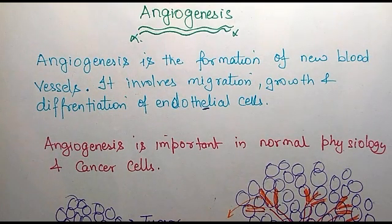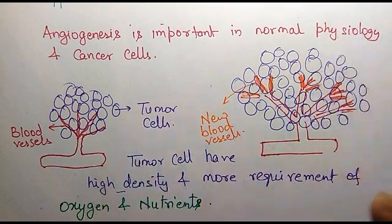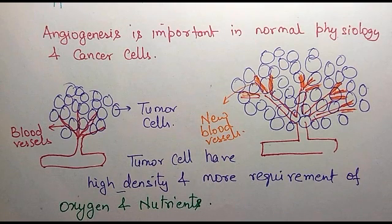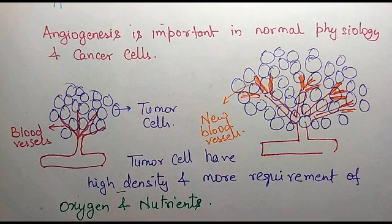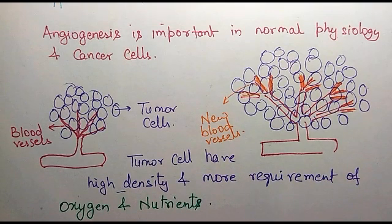Let's have a look at the significance and mechanism of angiogenesis in cancers. Now, any cell — tumour or otherwise — has basically two requirements: it requires oxygen and nutrients, and both of these are supplied by the blood. So any tissue or organ always has a requirement for blood. In tumour cells there is even higher cell density as compared to normal cells, so tumours have a greater requirement for nutrients and oxygen.